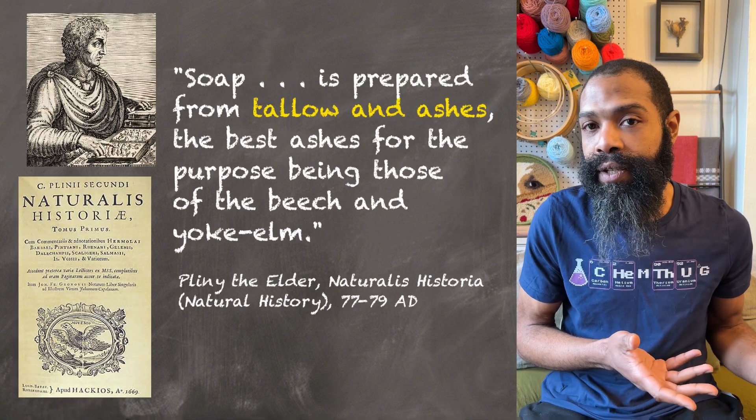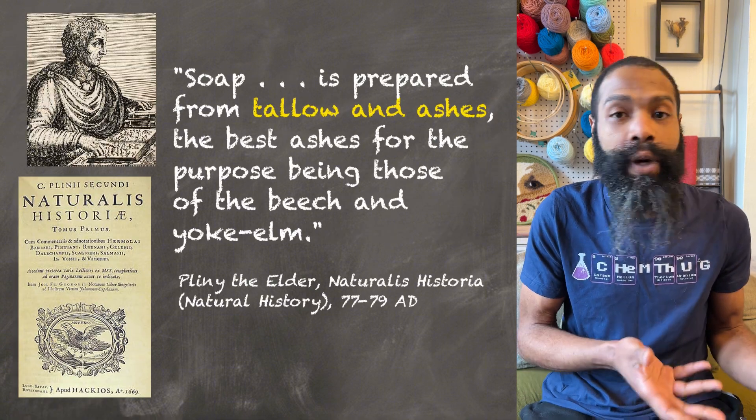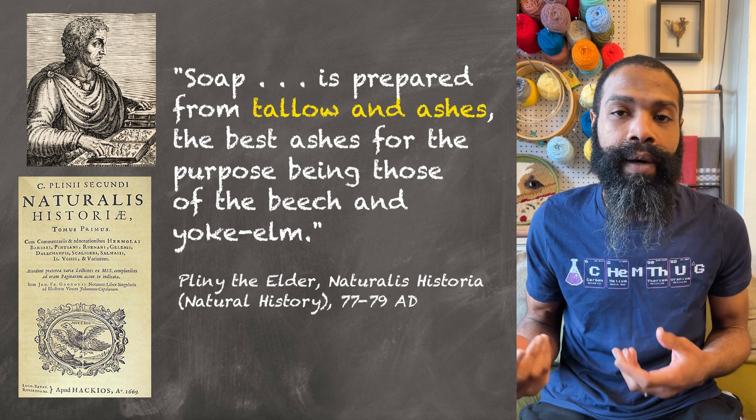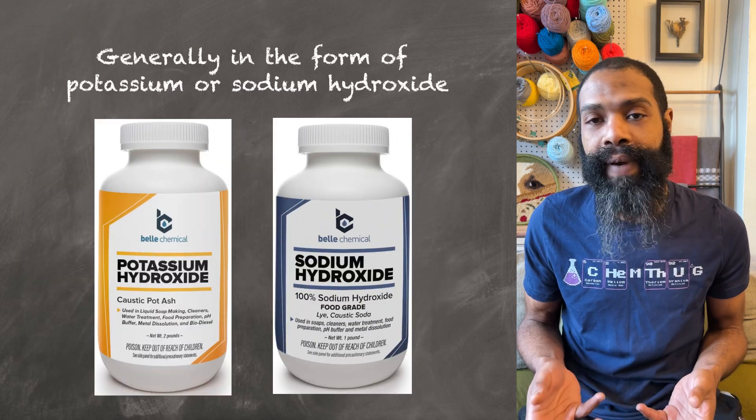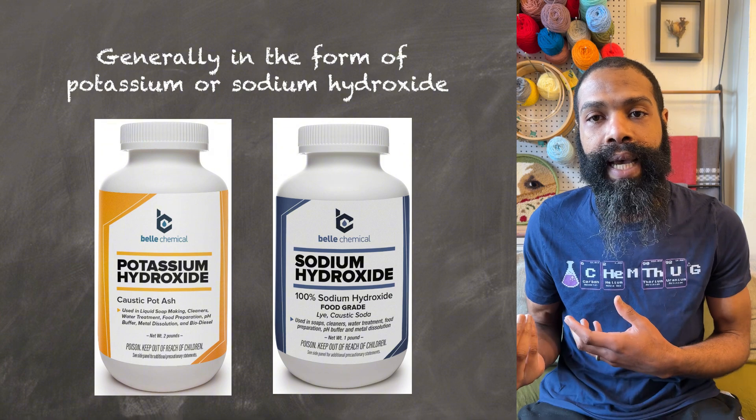Back in the day, we just mixed fats and oils with wood ash, and then we boiled it for a little while and then soap would pop out. Nowadays, instead of the wood ash, we use lye and we boil it with the fats and oils for a while, and then soap pops out.